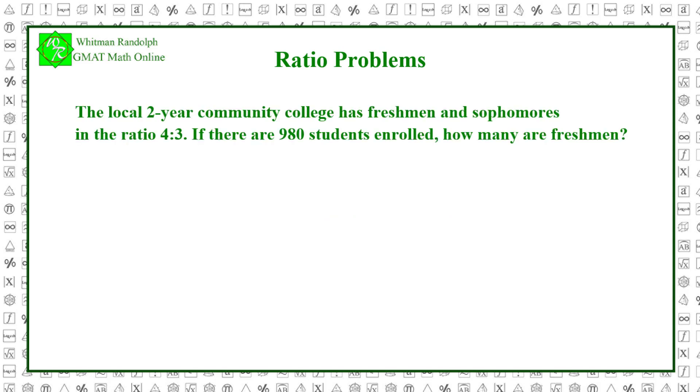The local two-year community college has freshmen and sophomores in the ratio 4 to 3. If there are 980 students enrolled, how many are freshmen? Let's find the solution. If the ratio is 4 to 3, then 4 sevenths of the students are freshmen and 3 sevenths are sophomores.